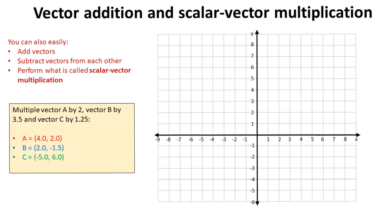The last thing is being able to perform scalar-vector multiplication. And this is really straightforward. We're simply multiplying the vector by the number that's given in the exam. So we're going to multiply vector A by 2, vector B by 3.5, and C by 1.25. So first, let's map the three vectors onto our graph.